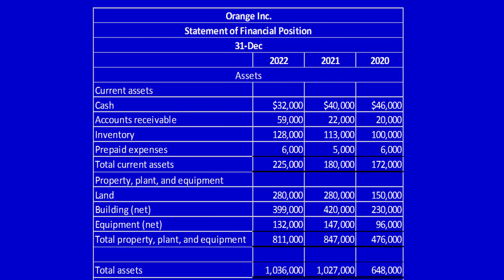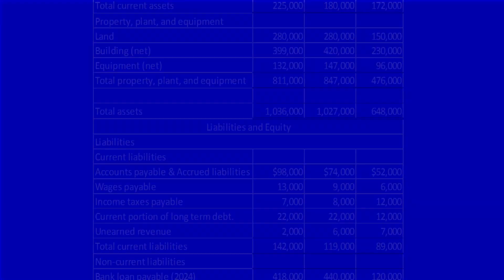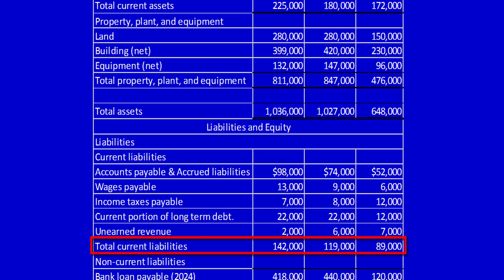We're going to calculate the current ratio for 2022 where the current assets are $225,000, 2021 current assets $180,000, and 2020 where the current assets are $172,000. We also need the current liabilities. Total current liabilities are $142,000, $119,000, and $89,000 from 2022 down to 2020.